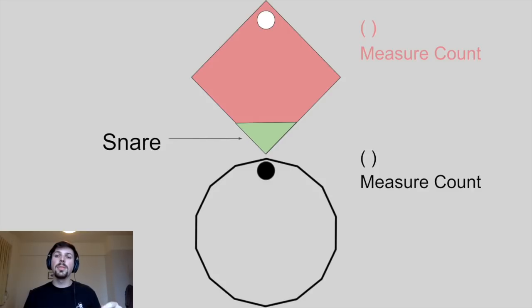The white dot on top denotes where we are in the measure for the drums. And the black dot on the bottom is where we are in the measure for the guitar and the bass. And these are both going to rotate as we count.